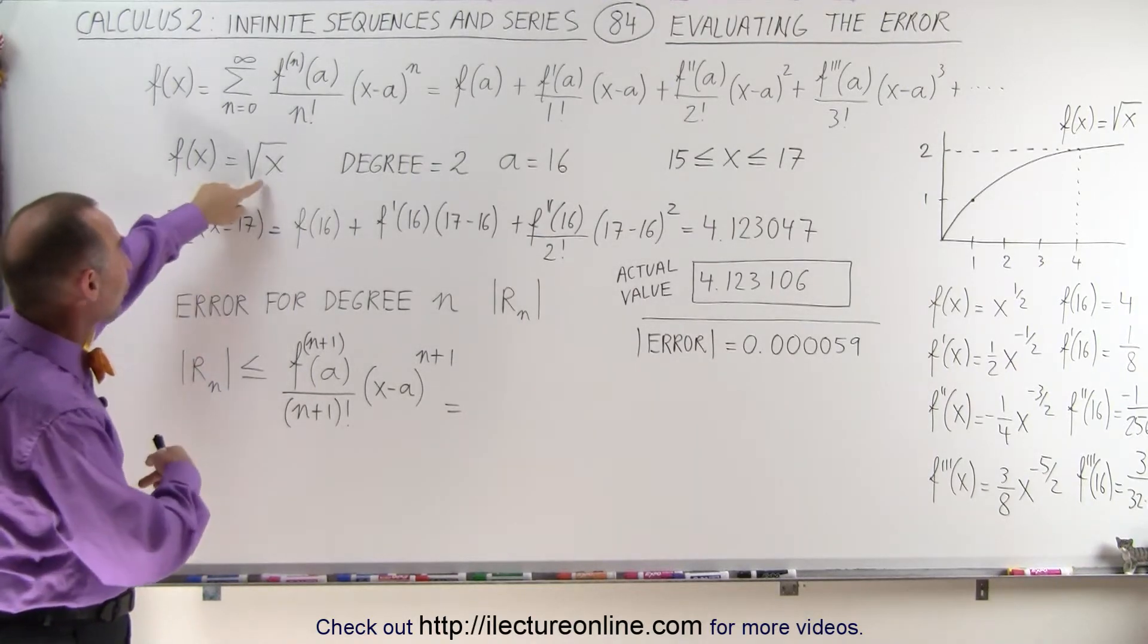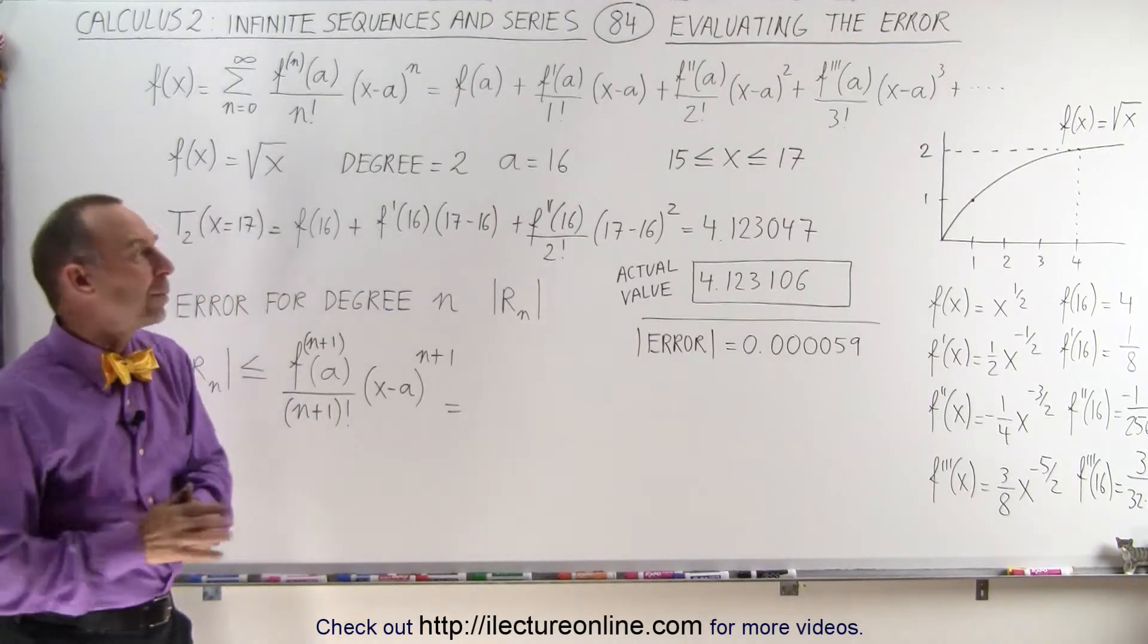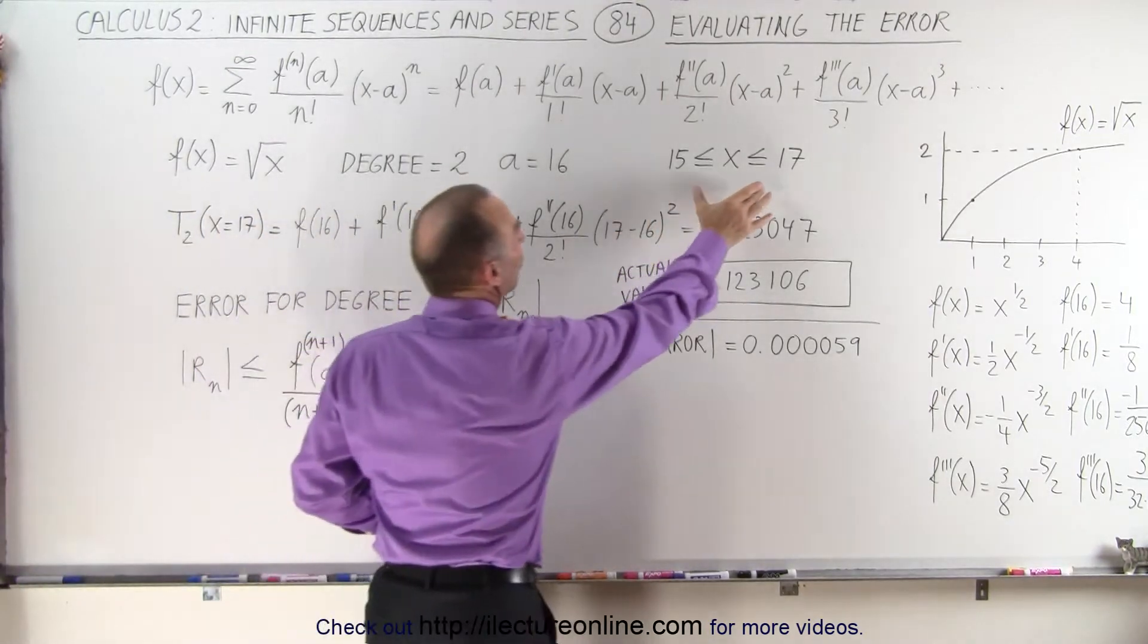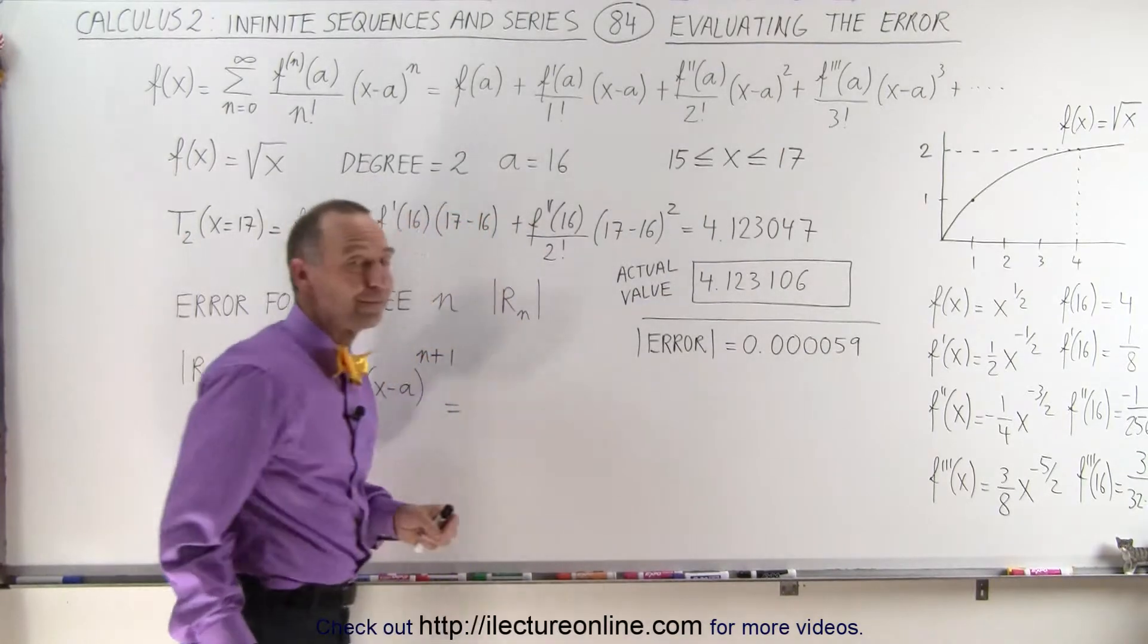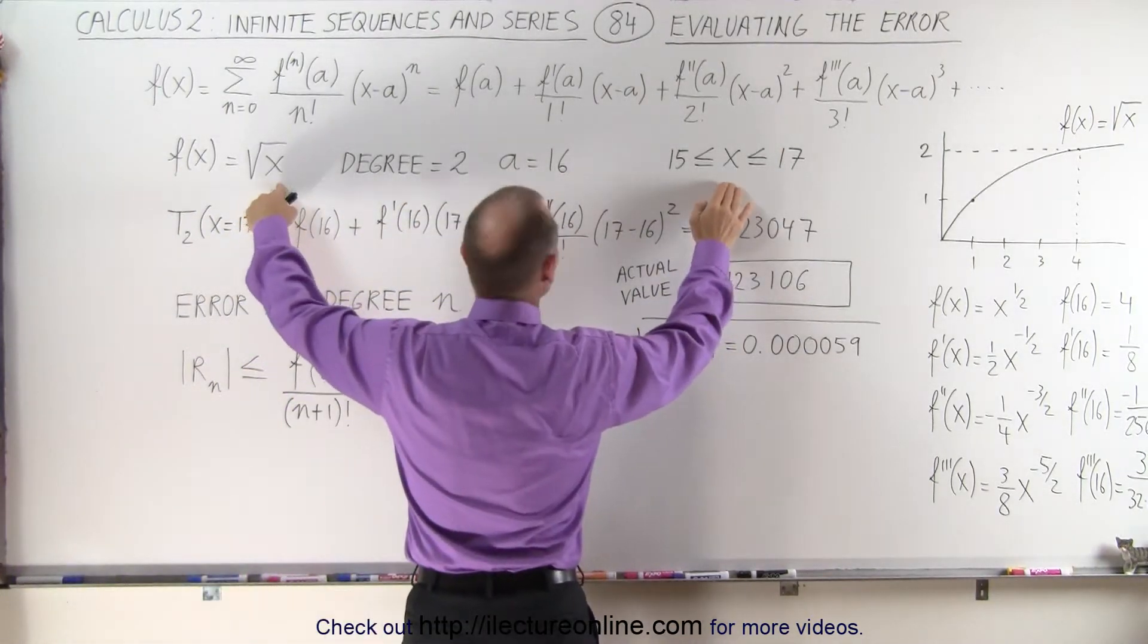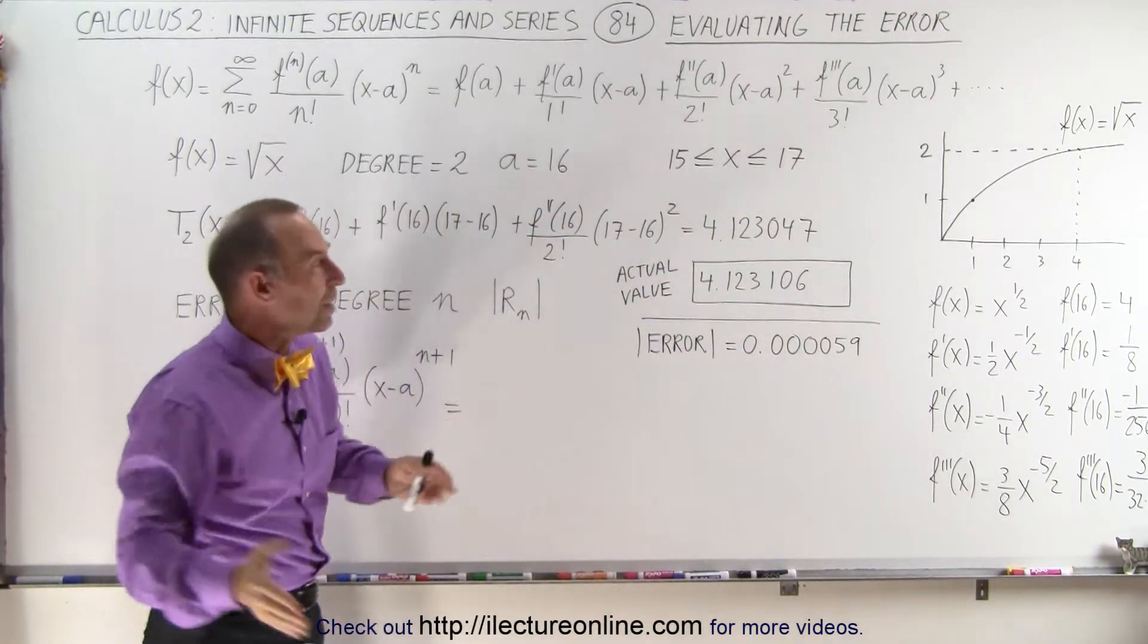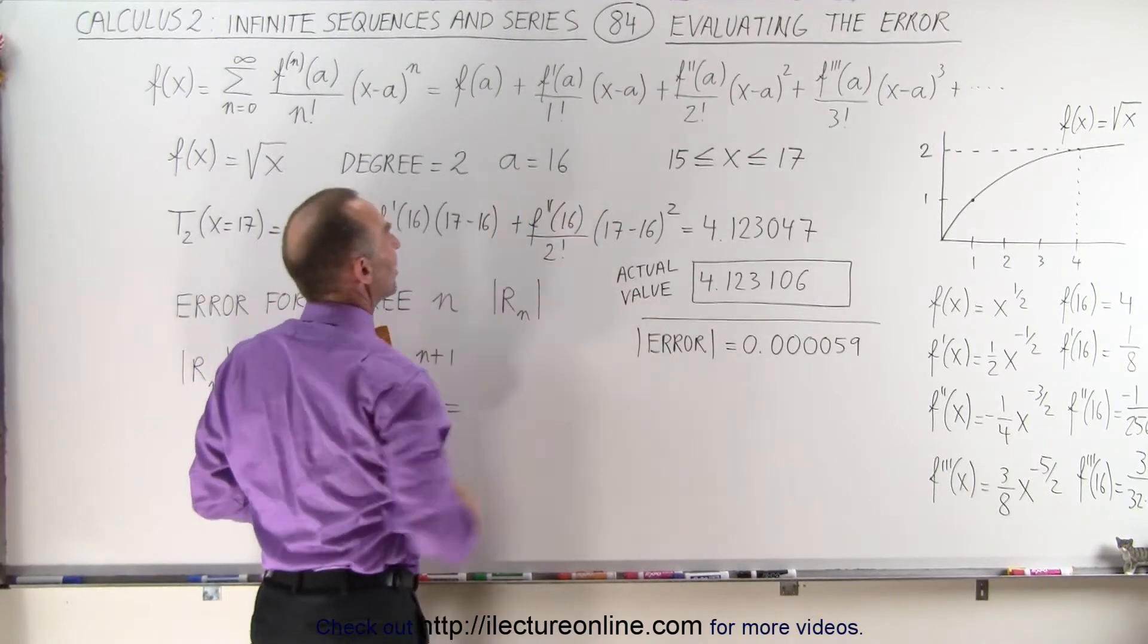In this case, the function was the square root of x. When we picked a value for a that was very close to the value we wanted to evaluate the function at, in this example, we want to evaluate the function, the square root of x, for values of x between 15 and 17. So in the Taylor series expansion, we used a equals 16.